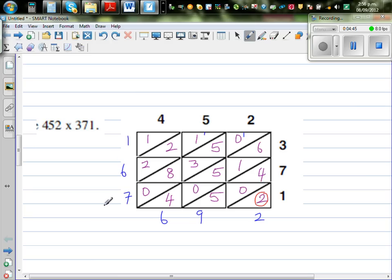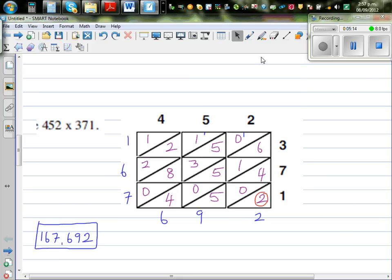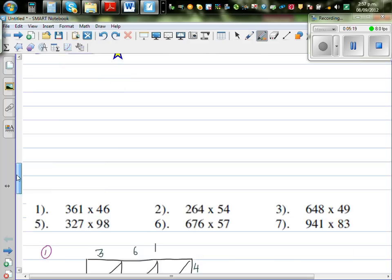1 is here, so the answer is 167,692. It's so easy and so fast to do this way. So let's again check it. 452 times 371. 167,692. So your answer is right.